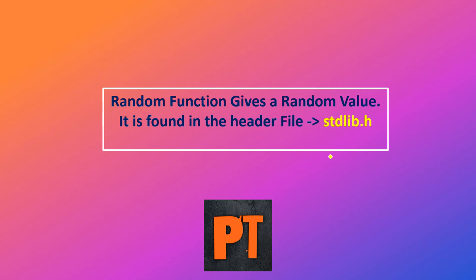Random functions give a random value — it's very obvious. It is found in the header file stdlib.h. You have to include this header file. I hope you have the basic C++ knowledge. Let's talk about it.